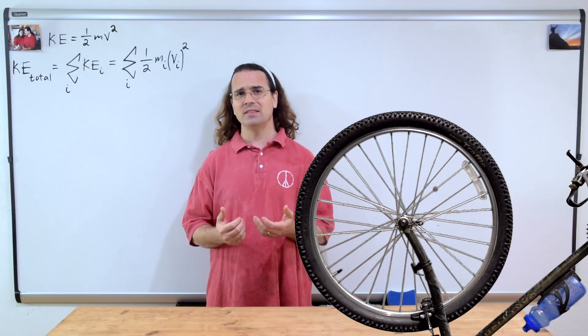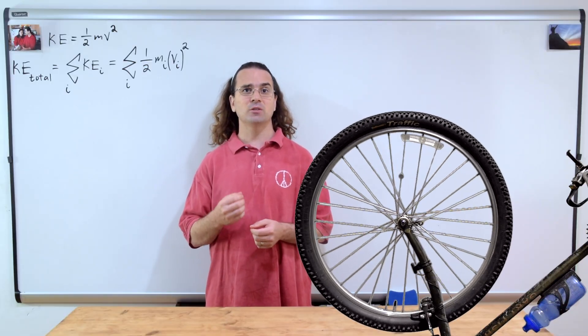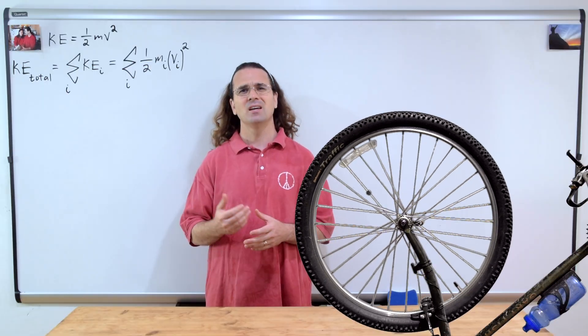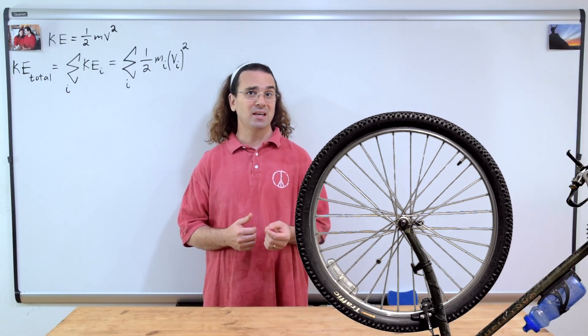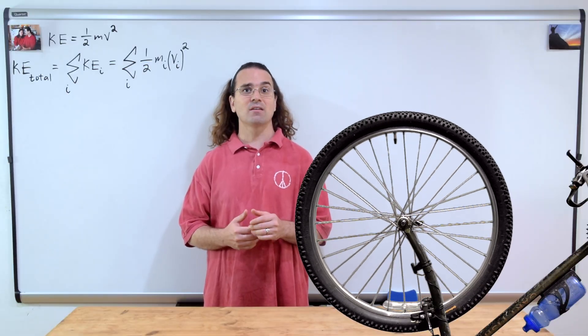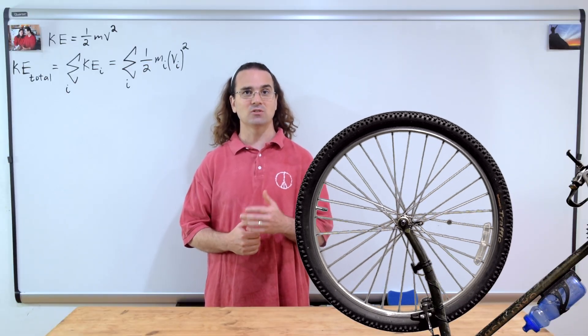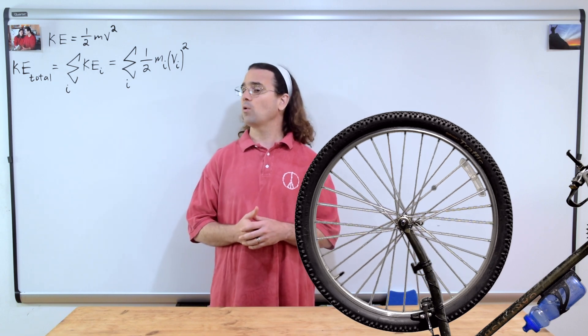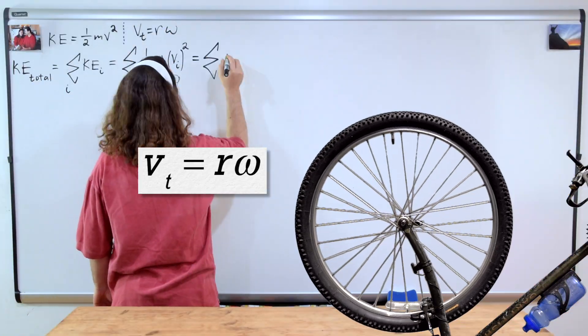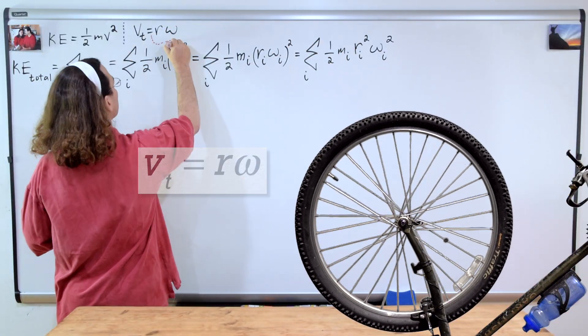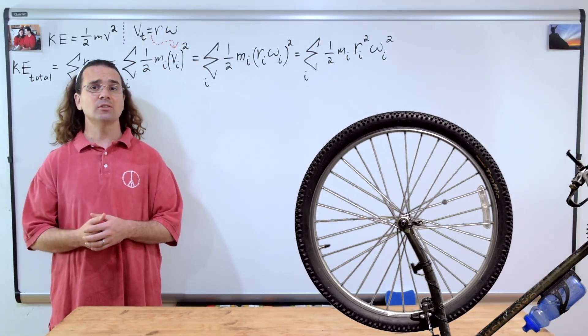Notice the velocity in this equation is the velocity of every small piece which makes up the object. This velocity must be a tangential velocity because the object is rotating and therefore every part of the object is moving in a circle. Bo, what is the equation that relates tangential velocity to angular velocity? Tangential velocity equals radius times angular velocity, which we can then substitute into our equation.